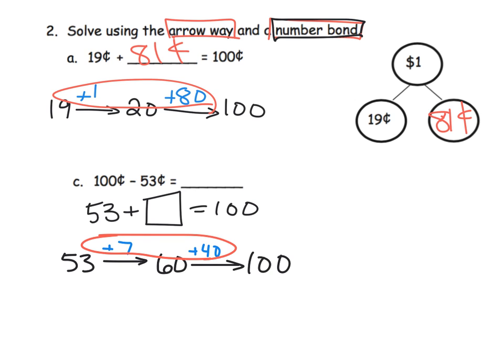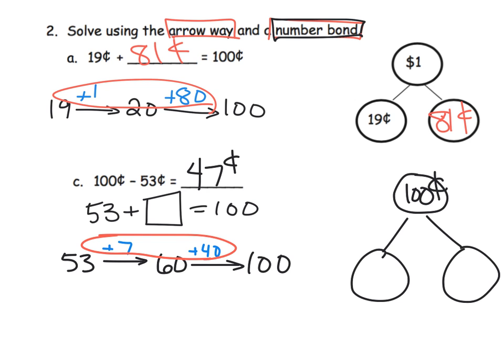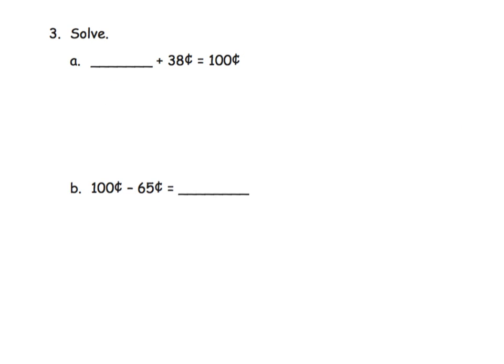What did we add all together? We added 47 cents, so that is the subtraction. Our number bond could be 100 cents or one dollar, and our two portions are 53 cents and 47 cents. Keep in mind that these could be swapped because of the commutative property.